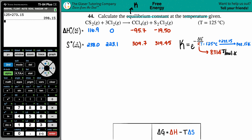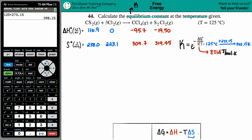We still need ΔG. You might think we can look up standard ΔG° values from the back of the textbook — products minus reactants — but that approach only works at 25°C. We're at a higher temperature, so ΔG will differ. We need another way, using the formula ΔG = ΔH - TΔS, which works at any temperature. That requires finding standard ΔH and standard ΔS from the appendix.